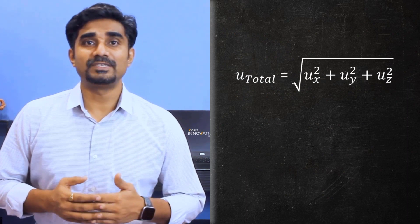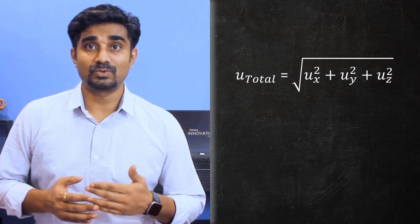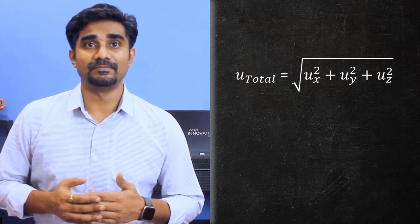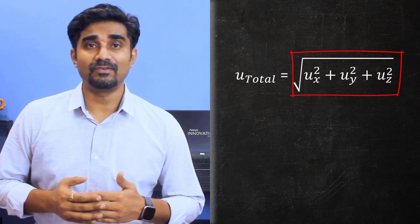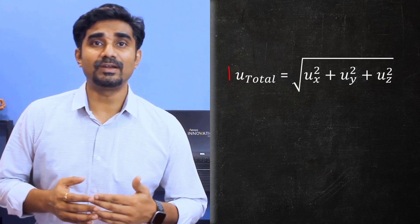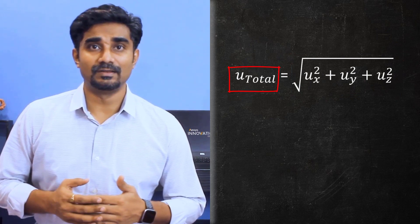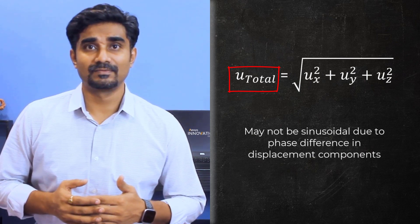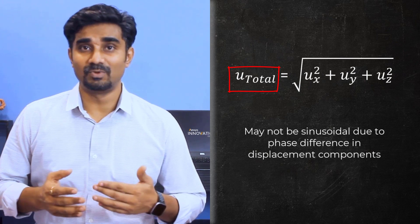For example, for total deformation, which is calculated as the square root of sums of squares, i.e. SRSS of ux, uy and uz. Although on the right side of the equation, ux, uy and uz are all sinusoidal, the calculated value u_total might not be sinusoidal because there may be phase difference in the displacement components. And taking SRSS will always yield positive value, which can be periodic but not sinusoidal. Similar reasoning applies to principal stress and strain and equivalent stress and strain.